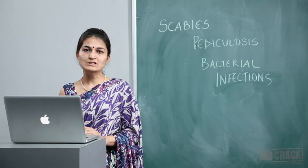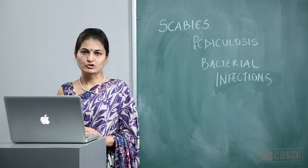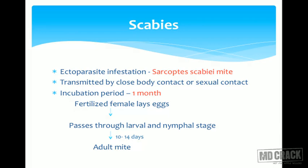Coming to the first parasitic infestation, that is scabies, it is an ectoparasite infestation caused by the mite Sarcoptes scabii. It is transmitted by close body contact and in adults it can also be transmitted by sexual contact. When a patient comes in contact with Sarcoptes scabii mite for the first time — that is primary infestation — it takes around one month for the patient to develop a hypersensitivity reaction to the mite. Therefore, the incubation period is one month.